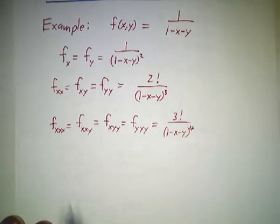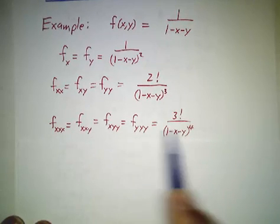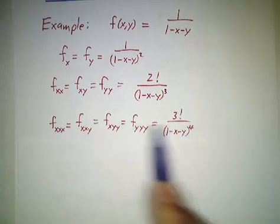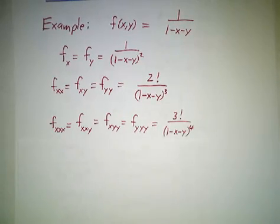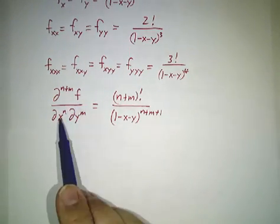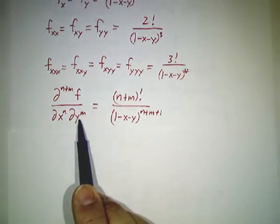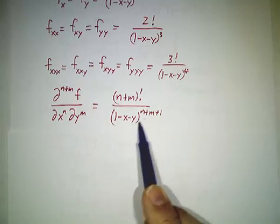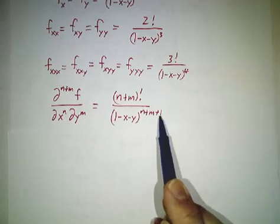Really it's separate calculations, but they all give the same answer. So if you take n plus m derivatives, n times with respect to x and m times with respect to y, you get n plus m factorial, and this to the n plus m plus first power.